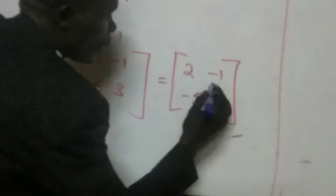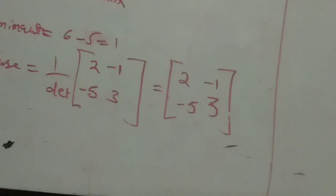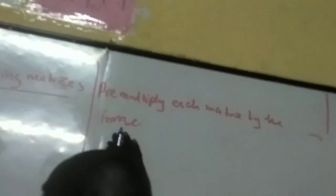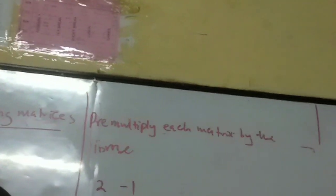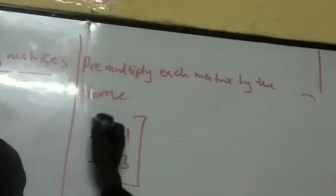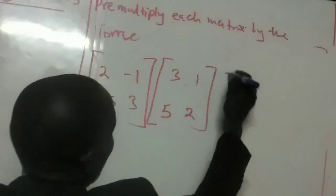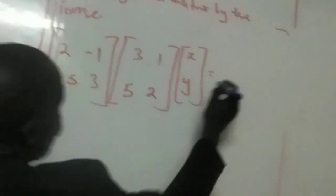That is the inverse of that matrix. After getting the inverse, we pre-multiply each matrix by the inverse. So the inverse comes ahead of the matrix, and therefore we have the inverse [2, negative 1, negative 5, 3] multiplied by the coefficient matrix [3, 1, 5, 2], and the unknown matrix [x, y] should be equal to the inverse [2, negative 1, negative 5, 3] multiplied by the solution matrix [7, 12].